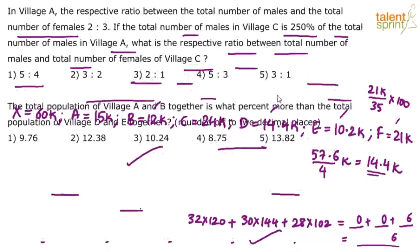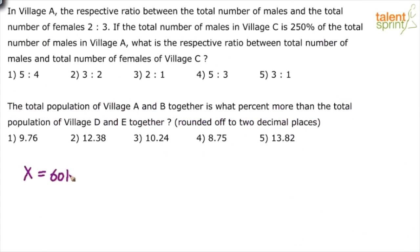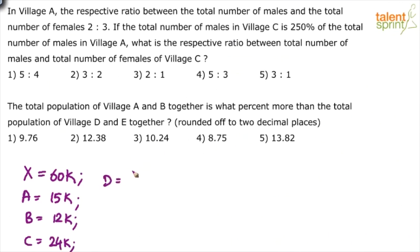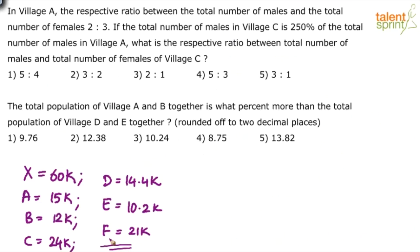Let me share the screen and present the next two questions. I'll recap the values: X equals 60k, A is 15k, B is 12k, C is 24k, D is 14.4k, E is 10.2k, and F is 21k. These are the values we'll use for the remaining questions.